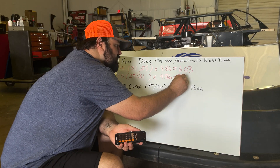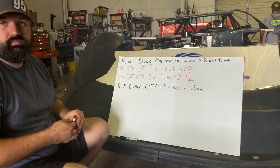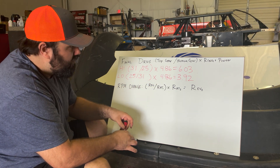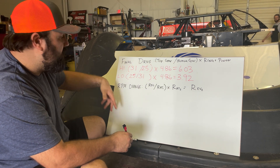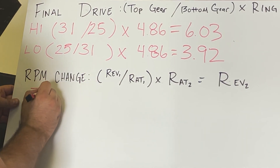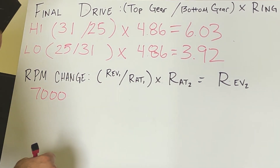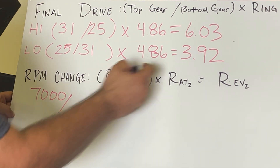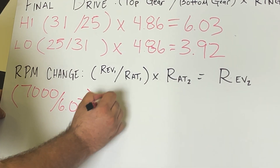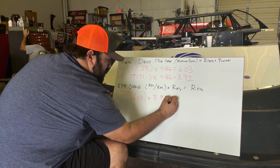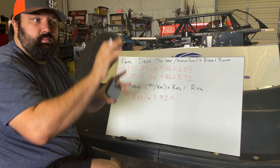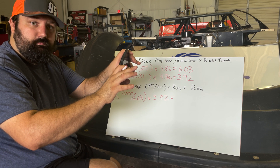We can also calculate the RPM change we'd get by changing gears. As an example, if we were to flip the top and bottom gears — going from high to low — if we're running 7,000 RPM on track with it in high, the ratio is 6.03. We take that times ratio number two to see how much RPM we gain by switching the two gears in the quick change.